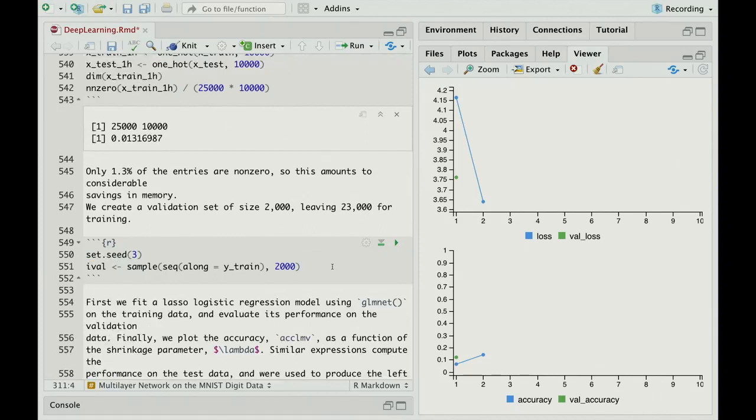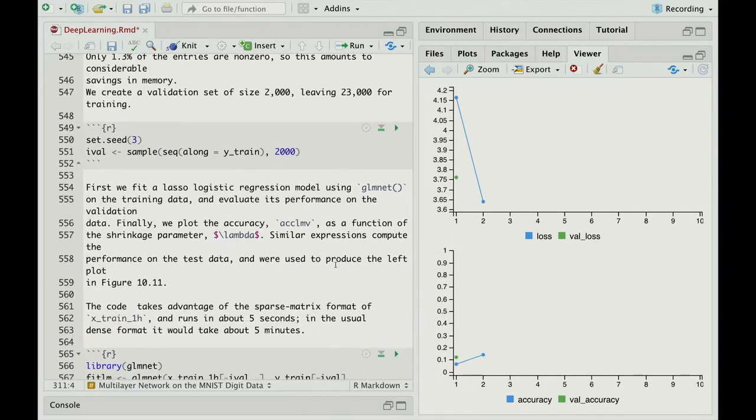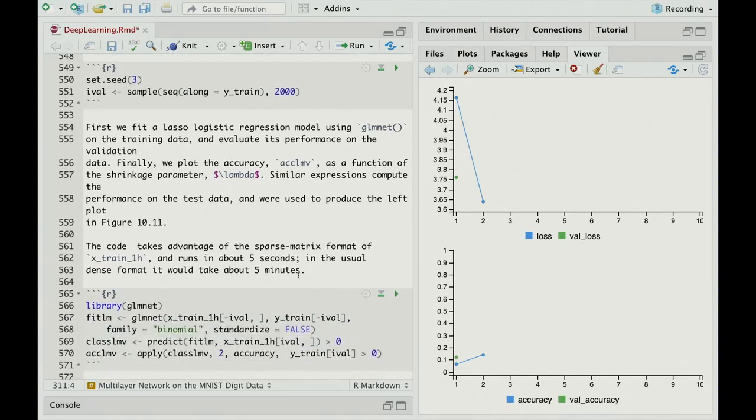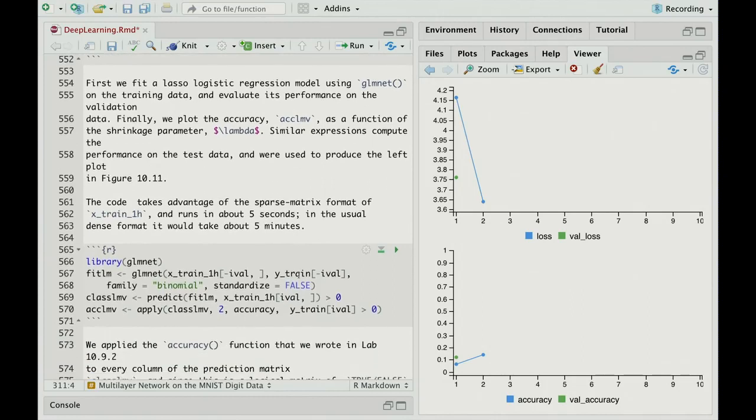We're going to sample a validation set of size 2,000 just so that we can monitor progress and select tuning parameters. So first, we'll fit a lasso logistic regression using the Glimnet and evaluate performance on the validation data. And we'll plot its accuracy as a function of the shrinkage parameter lambda. And Glimnet will take advantage of the sparse matrix format because this is a pretty massive X matrix. But Glimnet knows how to take advantage of the sparsity. It just knows because X-train is, you don't tell it, it figures it out.